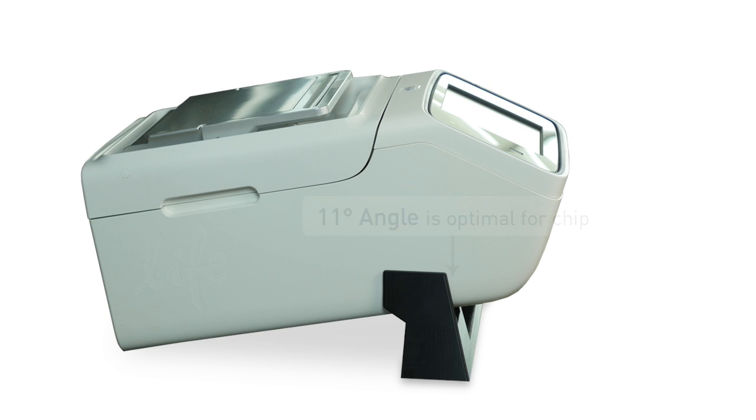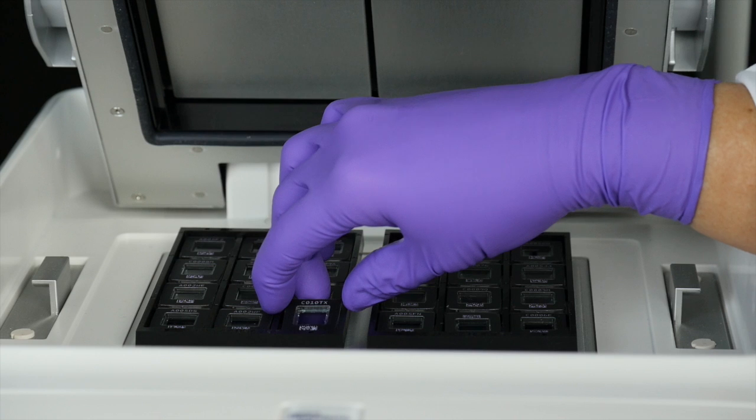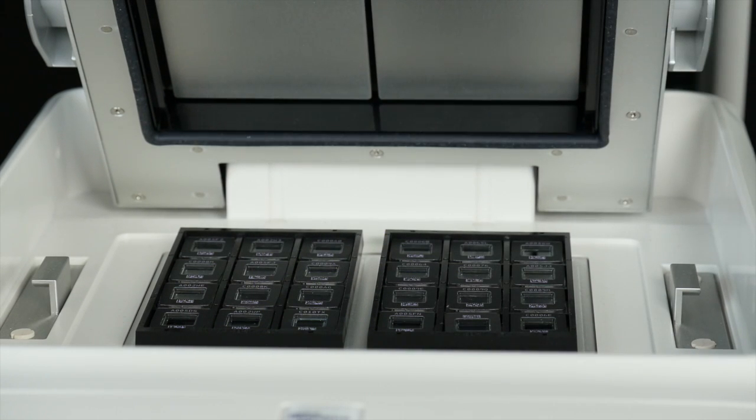To prepare the dual flat block thermal cycler, insert the tilt base under the front of the instrument. This ensures an optimal 11 degree tilt of the chips towards the bubble management area during thermal cycling. Also, remember that chips should be placed so that the chip IDs face the front of the thermal cycler.